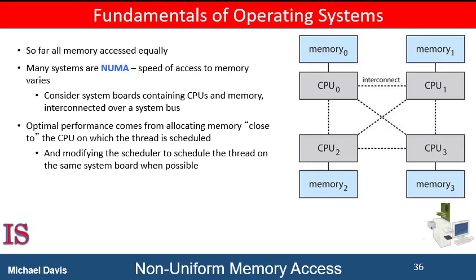Such a system is made up of multiple CPUs, each with its own local memory. The CPUs are organized using a shared system interconnect, and a CPU can access its local memory faster than memory local to another CPU. NUMA systems are, without exception, slower than systems in which all memory accesses are treated equally. However, NUMA systems can accommodate more CPUs and therefore achieve greater levels of throughput and parallelism.